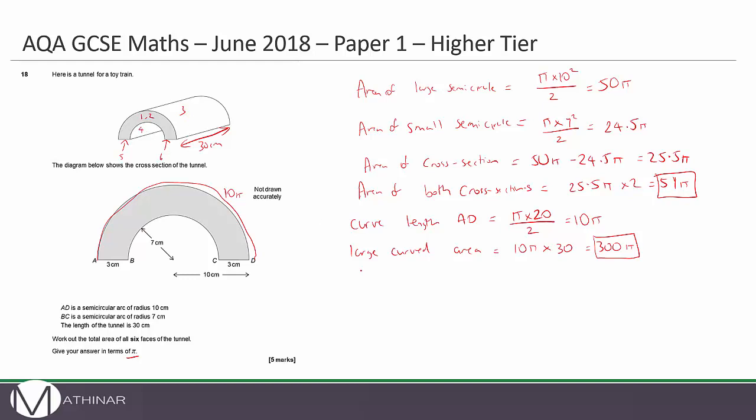Now let's look at surface area number four, which is going to be the curved surface. We need to work out curve length BC now. That's π times the diameter - the diameter of BC is 14 divided by 2, which is 7π. So then we can work out the small curved area, which is 7π times 30, which gives us 210π.